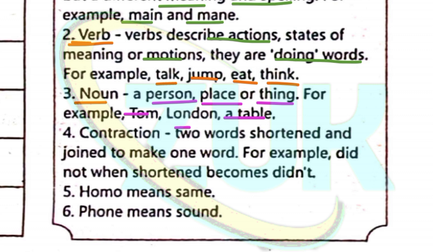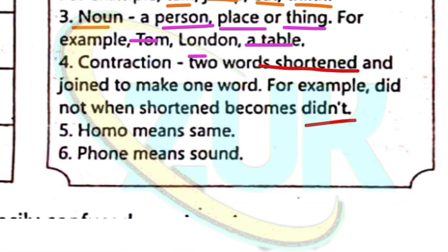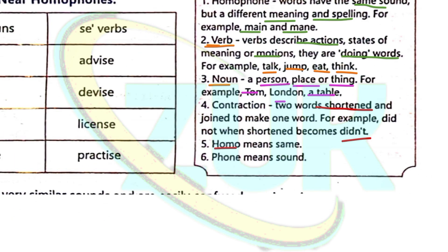A contraction is two words shortened and joined to make one word. For example, 'did not' becomes 'didn't.' A homophone has the same sound — the same sounding word is a homophone.